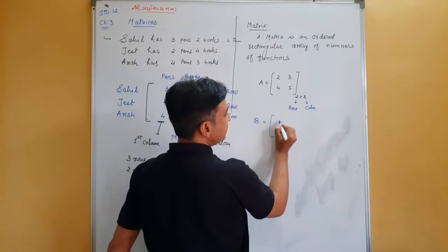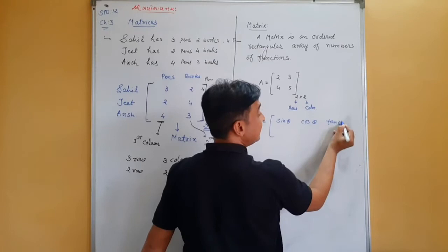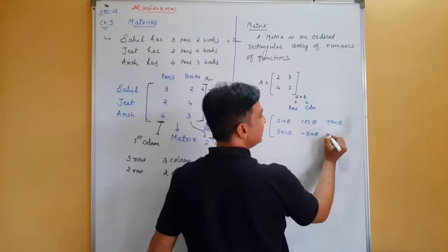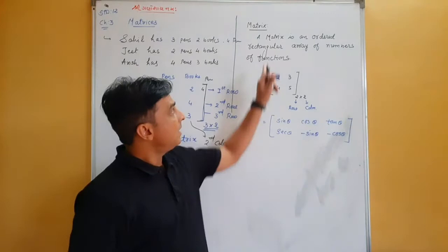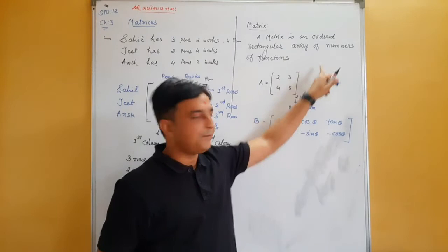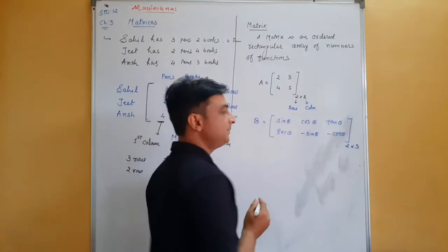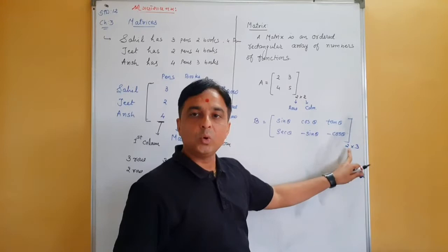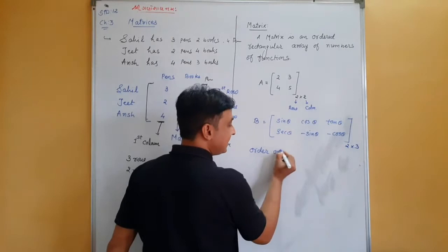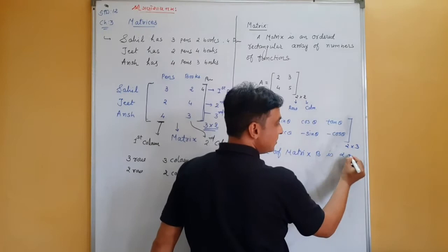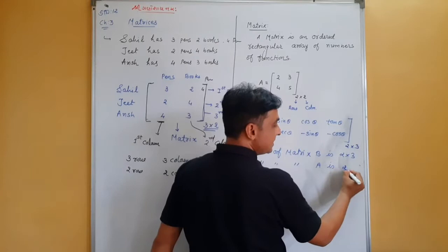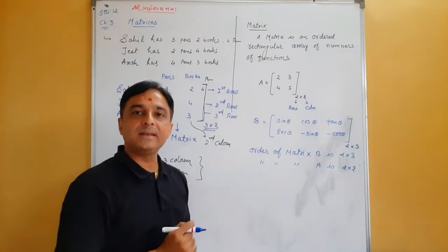The matrix with 3 rows and 2 columns has order 3×2 — not 6, but 3×2 — where 3 denotes the number of rows and 2 denotes the number of columns. For example, matrix B containing entries sin θ, cos θ, tan θ, sec θ, −sin θ, −cos θ has 2 rows and 3 columns, so its order is 2×3. The order of matrix A is 2×2. Order depends on the number of rows and columns.